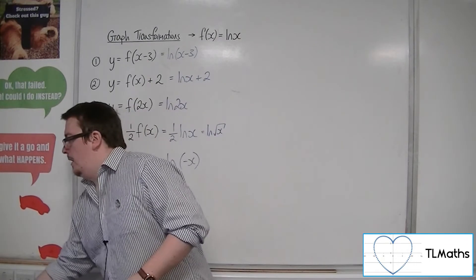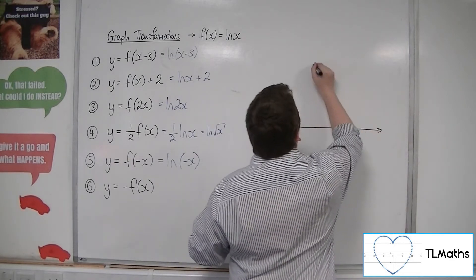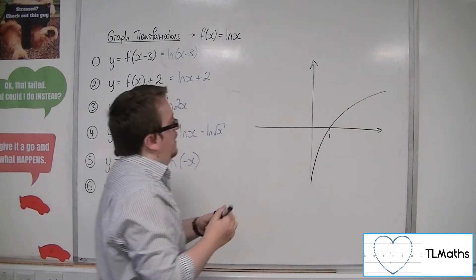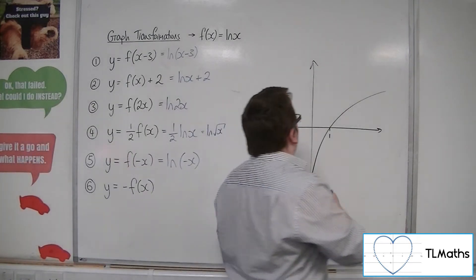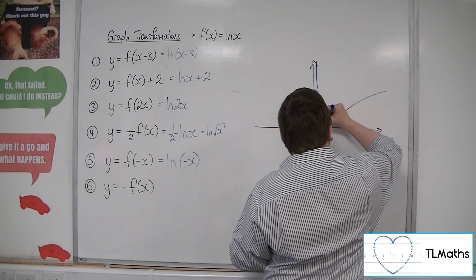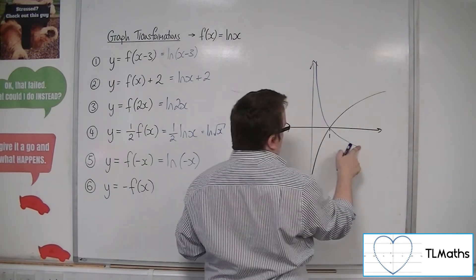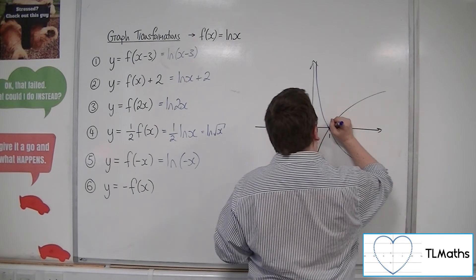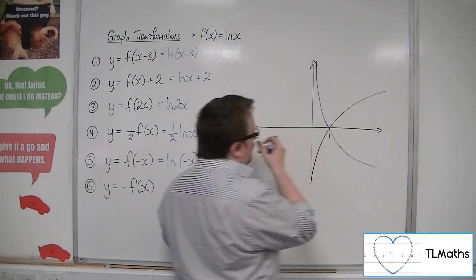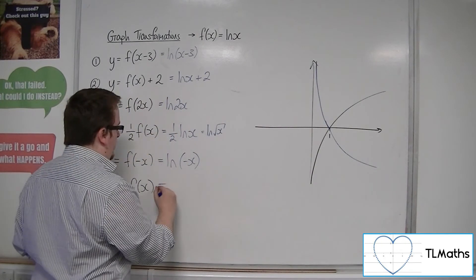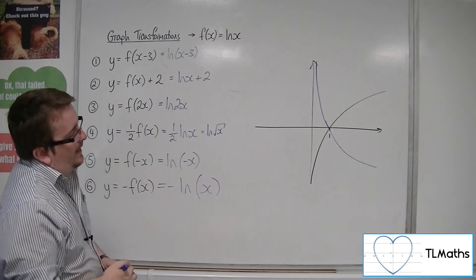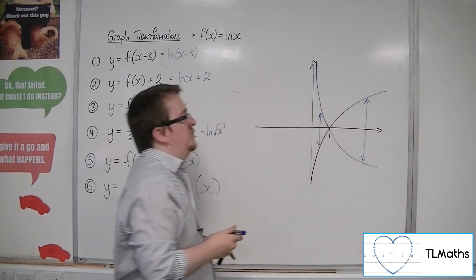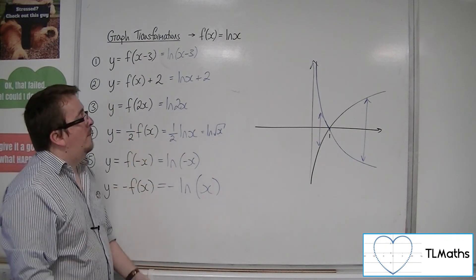Then finally, we've got minus f(x). Now, there's my original. This is a reflection in the x-axis. So our curve will look something like this, still going through 1. But this is what the shape of the curve would look like in order to be a reflection in the x-axis. So every single y-coordinate has changed sign. And that's how we can transform ln(x).